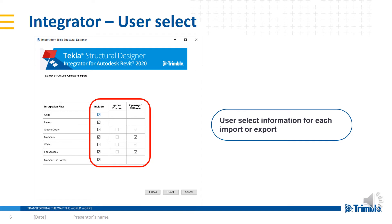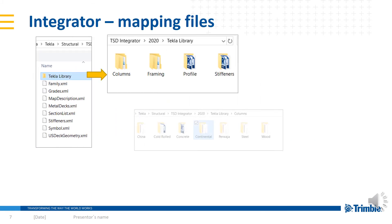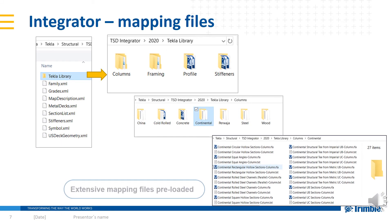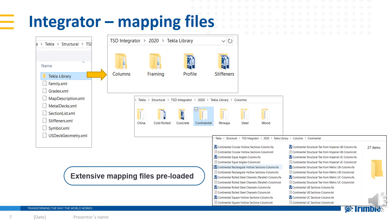As you can see on the left, users can choose whether to import or export grids, levels, slabs, members, walls, foundations, or forces. While Revit has built-in families, the integrator comes preloaded with a bigger list of sections, elements, shapes, and materials to avoid time-consuming tasks of creating families.